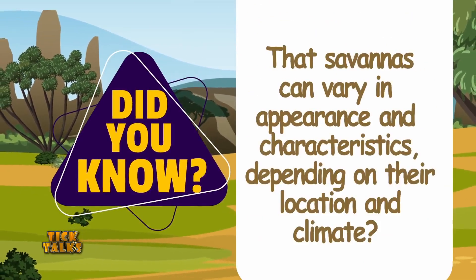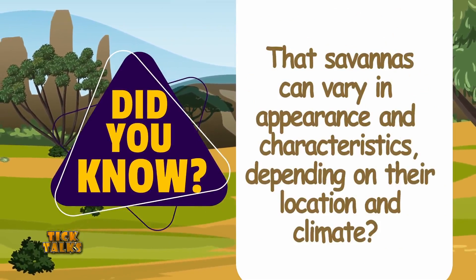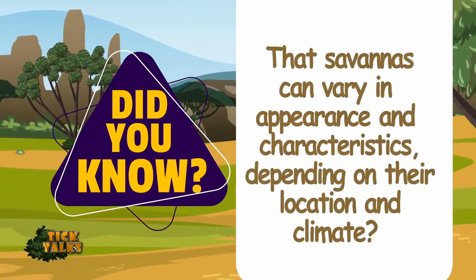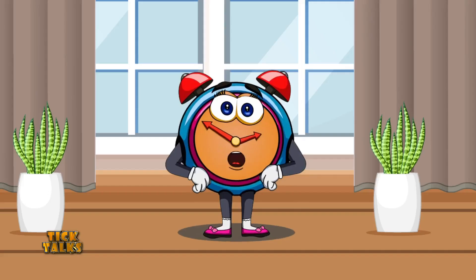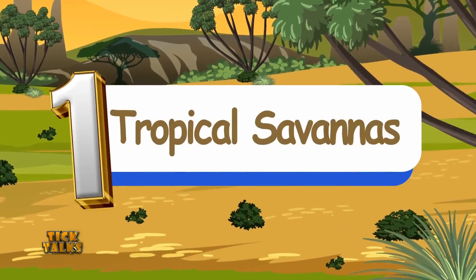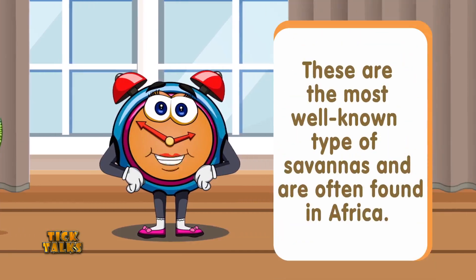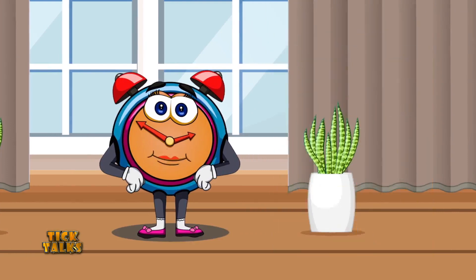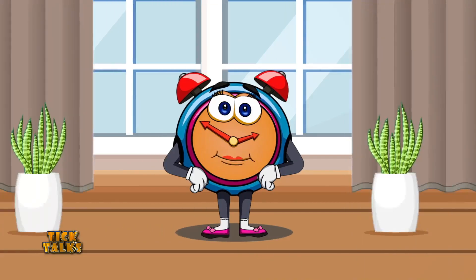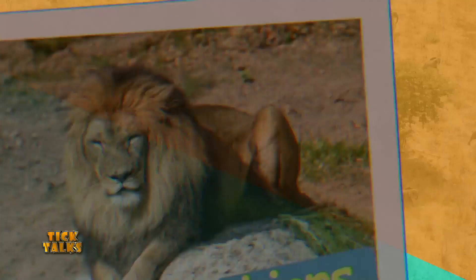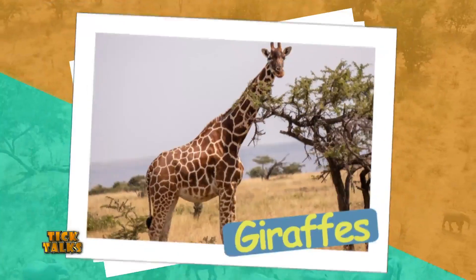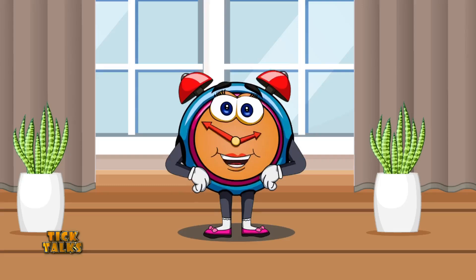Did you know that savannahs can vary in appearance and characteristics, depending on their location and climate? Some common types of savannahs include: Number one, as mentioned before, tropical savannahs. These are the most well-known types of savannahs and are often found in Africa. They have different wet and dry seasons with long periods of drought. Animals such as lions, elephants, zebras, and giraffes can be found in tropical savannahs.